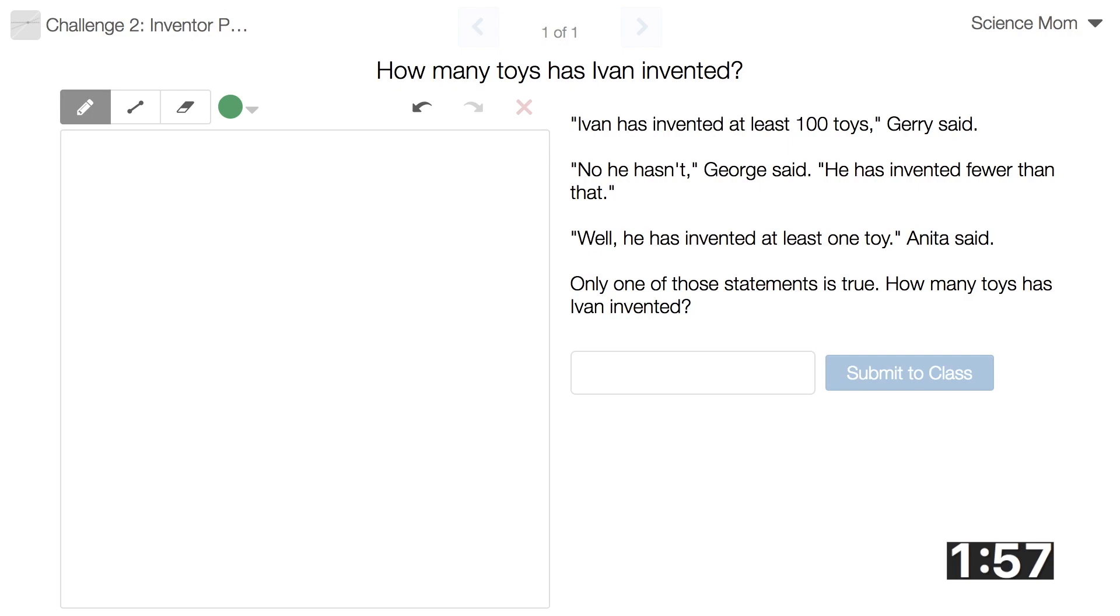Okay, Ivan has invented at least a hundred toys, Gary said. No he hasn't, George said. He has invented fewer than that. Well, he has invented at least one toy, Anita said. Only one of those statements is true. How many toys has Ivan invented? You're kidding. I'm supposed to come up with an exact number from that? Yep, I'm after an exact number.